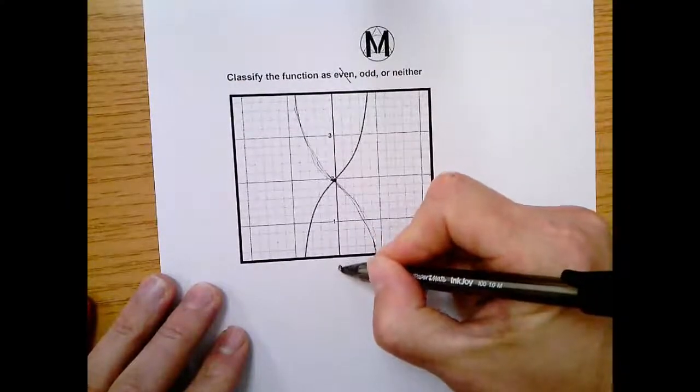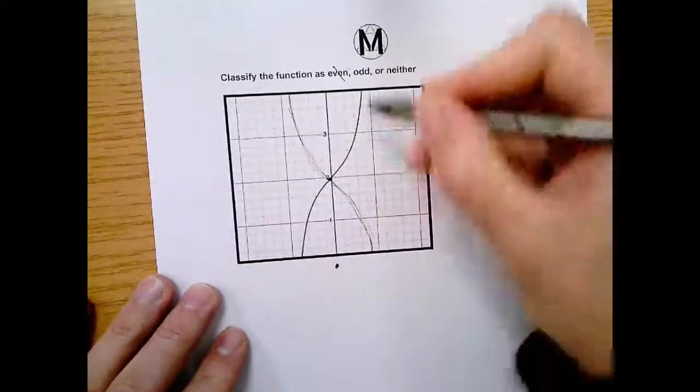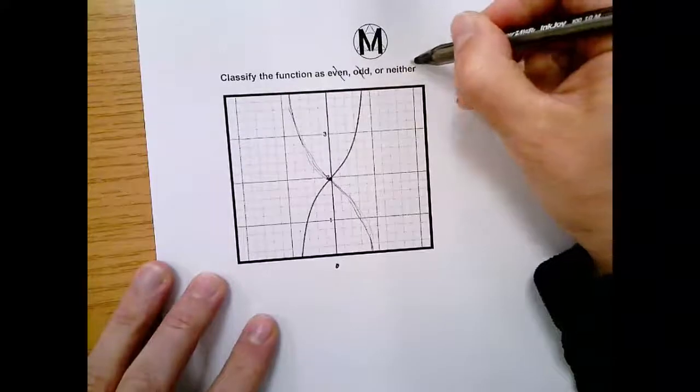The origin's way down here somewhere, actually. So it does not touch the origin. So we know it's not even. We know it's not odd. So then it is neither.